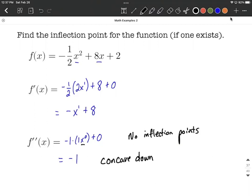That makes sense if we think about the original function. This was a quadratic function, so that means it's a parabola. Because that leading coefficient is negative, it's going to be opening downward and concave down for the entirety of the graph.